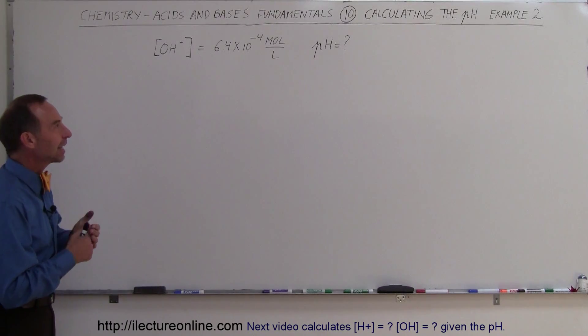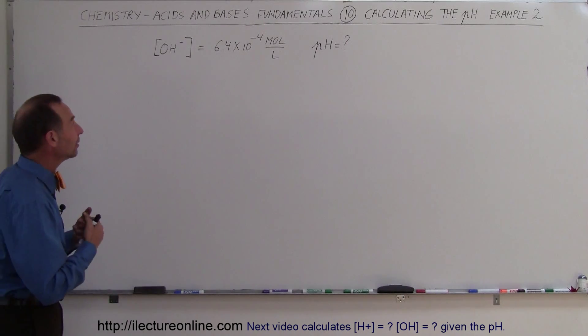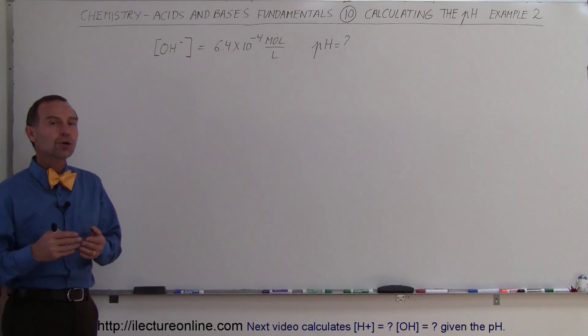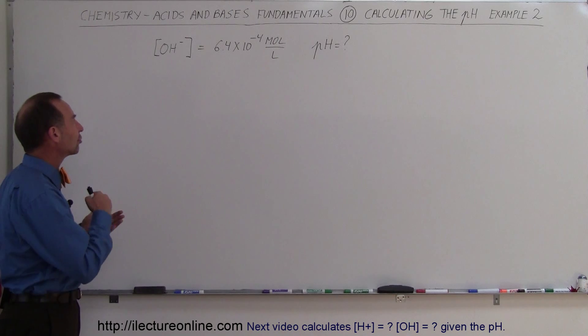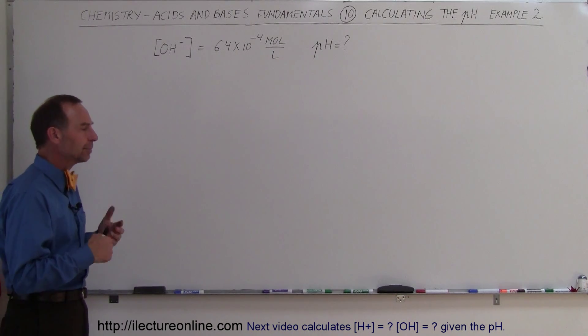Welcome to ElectronLine, and now we're going to take a look at a second example of how to calculate the pH. But in this case, you're not given the concentration of the hydrogen ion, you're given the concentration of the hydroxide ion. So how do you calculate the pH?